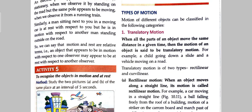The first one is translatory motion. When all the parts of an object move the same distance in a given time, then the motion of an object is said to be translatory motion. Jab kisi bhi object ka pura part jo hote hain, samay ke saath saath woh puri distance cover karta hai, toh aise motion ko hum translatory motion kehte hain. For example, a child going down a slide and a vehicle moving on a road.